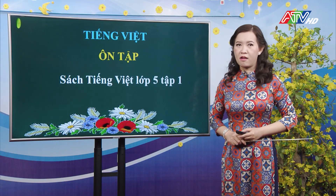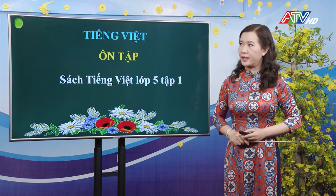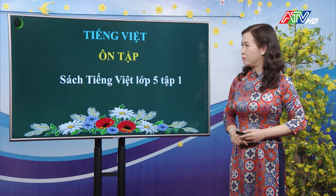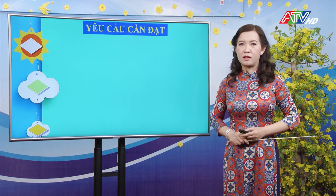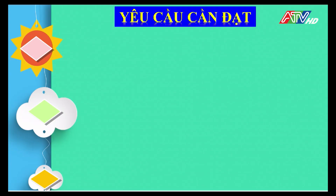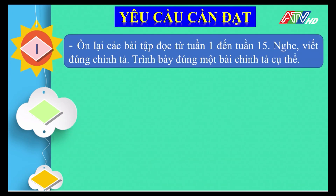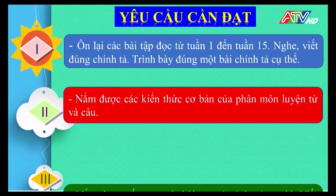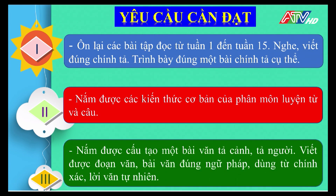Hôm nay, cô và các con sẽ cùng ôn tập lại các nội dung của bài từ tuần 1 đến tuần 15 ở sách tiếng Việt lớp 5 tập 1. Trong tiết học này, các con cần nắm một số nội dung như sau: ôn lại các bài tập đọc từ tuần 1 đến tuần 15, nghe viết đúng chính tả, trình bày đúng một bài chính tả cụ thể, nắm được các kiến thức cơ bản của phân môn luyện từ và câu, nắm được cấu tạo một bài văn tả cảnh, tả người, viết được đoạn văn, bài văn đúng ngữ pháp, dùng từ chính xác và lời văn tự nhiên.